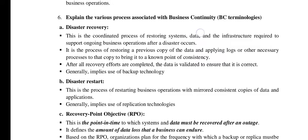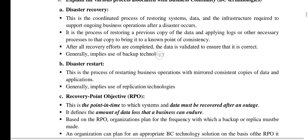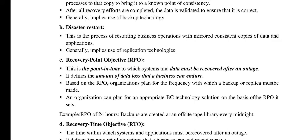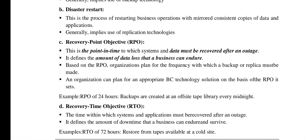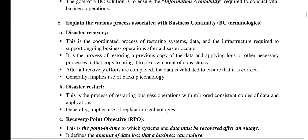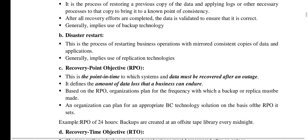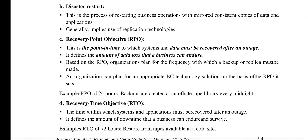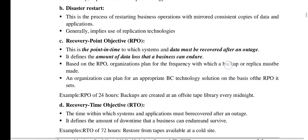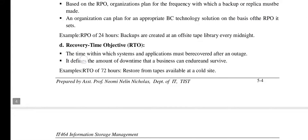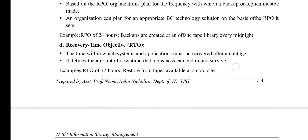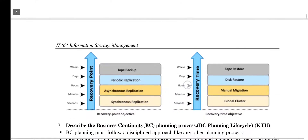The various processes associated with business continuity include: disaster recovery, disaster restart, Recovery Point Objective (RPO), and Recovery Time Objective (RTO). The Recovery Point Objective is the point in time to which the system and data must be recovered after an outage occurs. A figure is provided to explain this.